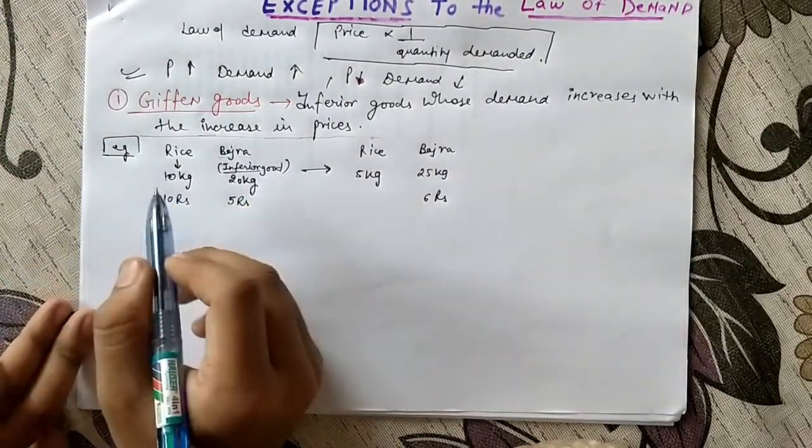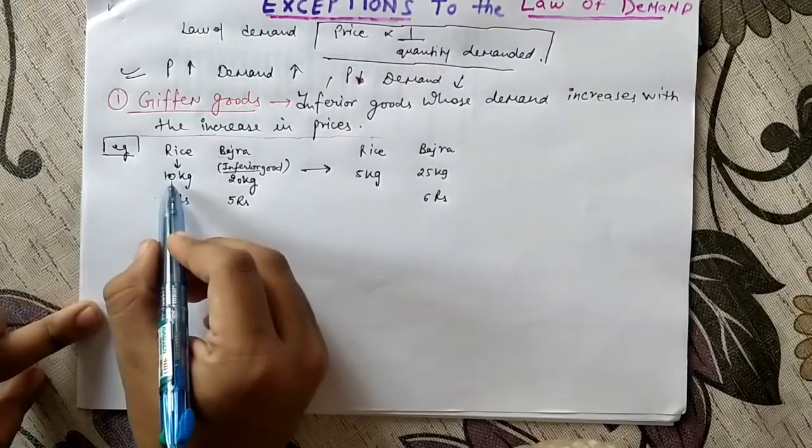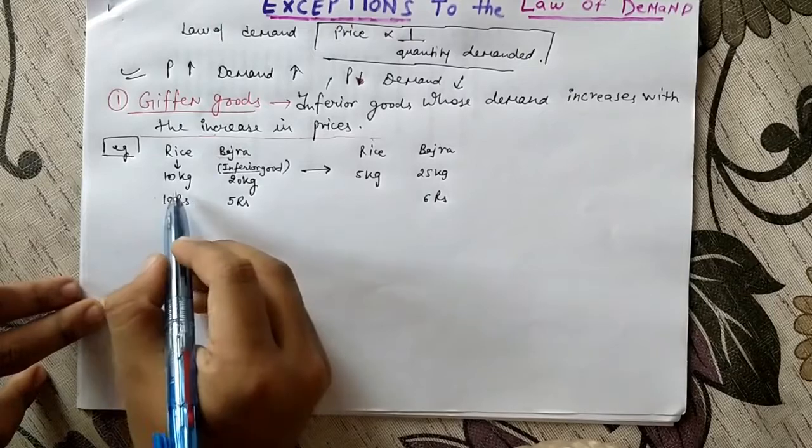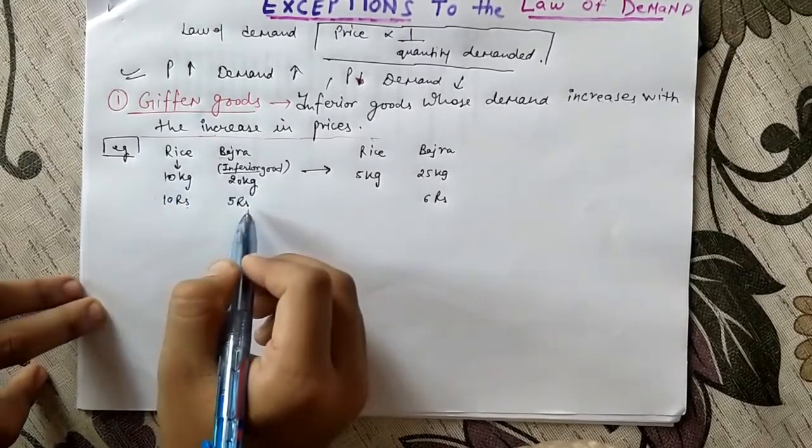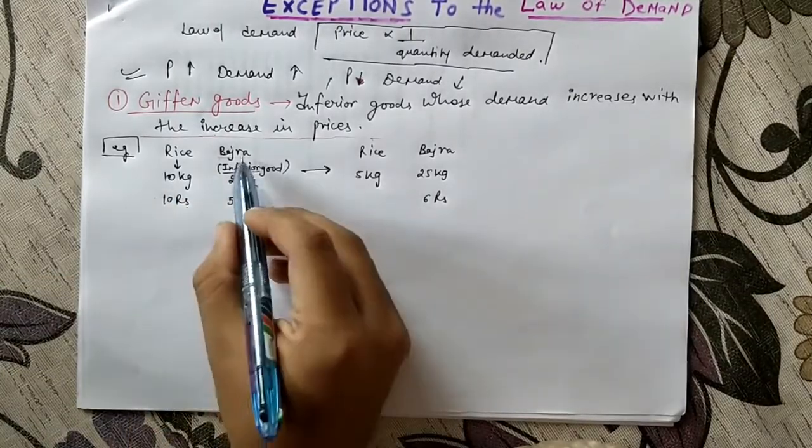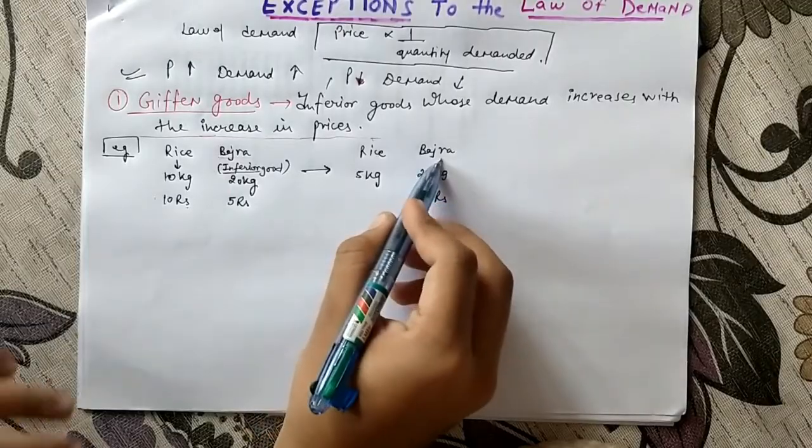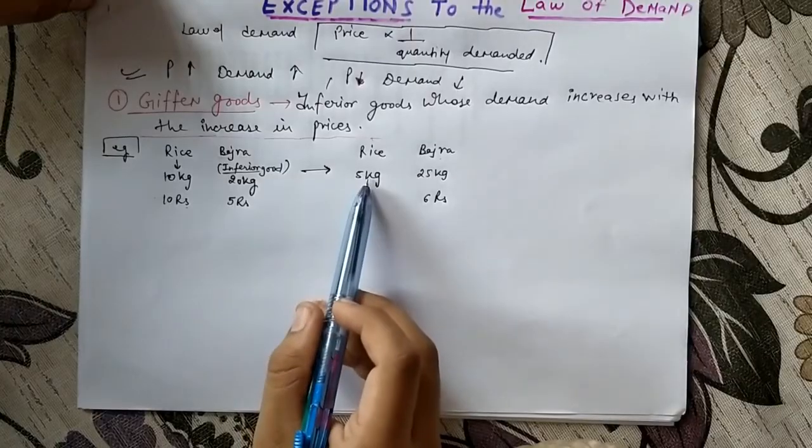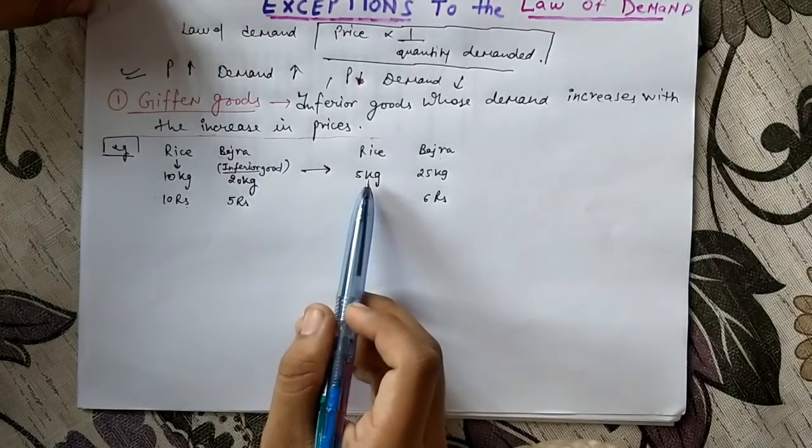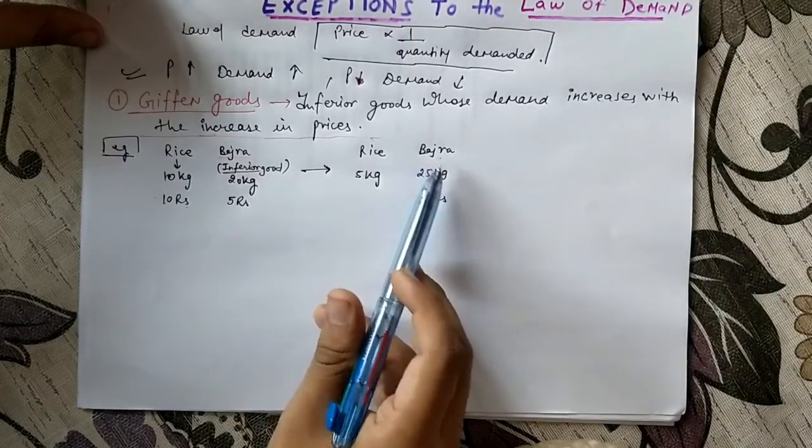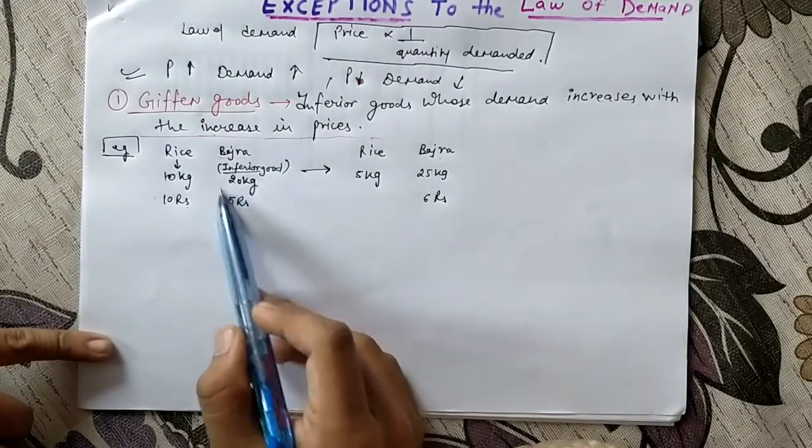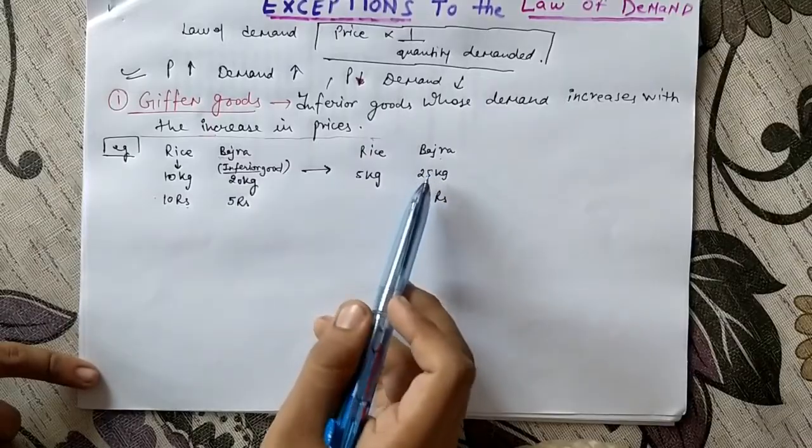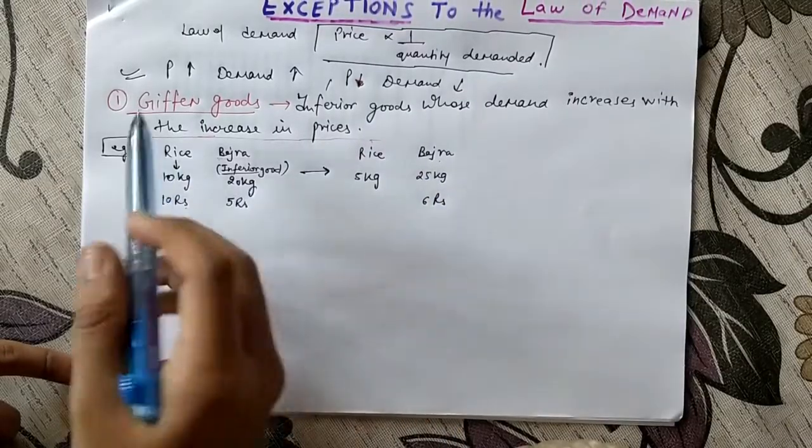For example, if there is a poor family, they purchase 10 kg rice per month and 20 kg of bhajra they consume. And the initial cost is 10 rupees for the rice and bhajra 5 rupees. What happens is if the price of bhajra increases, that is the inferior good, they will cut down the consumption of this rice by 5 kg and buy more bhajra. So previously they used to buy 20 kg and now they will buy 25 kg. So the demand will increase for bhajra. This is what we call the Giffen goods.